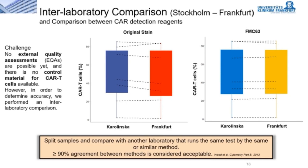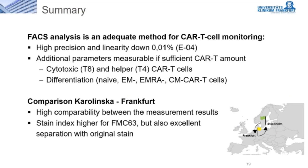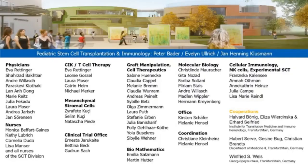As shown on the right graph, the better separation index with the new idiotype antibody gives almost the same value. To summarize, I have presented two topics: first, the establishment and validation of an assay for CAR T-cell measurement by flow cytometry, showing high precision and linearity down to 0.01% and the ability to measure additional parameters like cytotoxic and helper CAR T-cells and their differentiation into naive, effector, and memory subsets; and second, the results of our interlaboratory comparison with the Karolinska Institute, showing very high comparability between measurement results and a higher stain index for FMC63, but also excellent separation with the original stain.